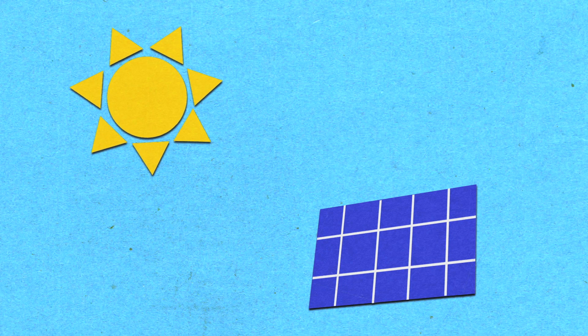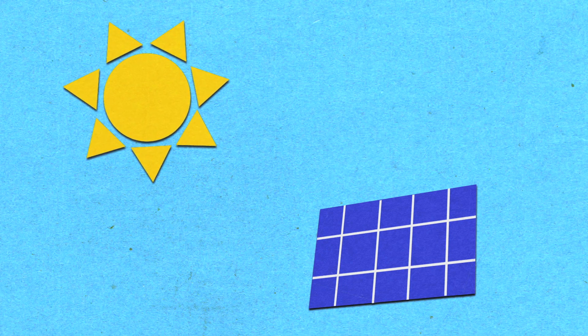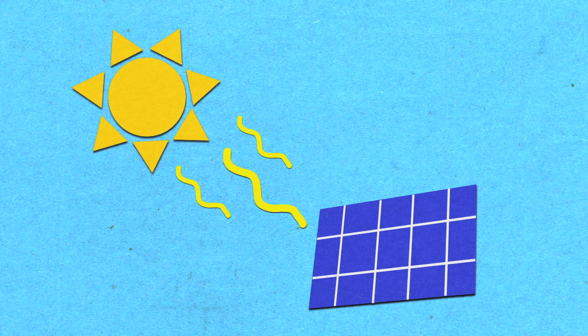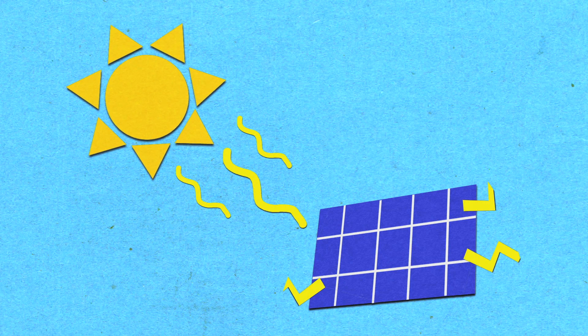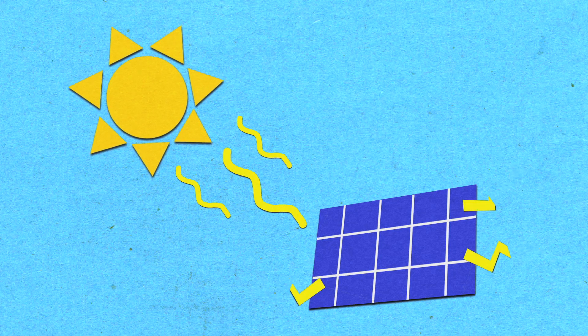Solar cells are materials that can take the energy that comes in from the Sun in the form of photons and convert those photons and that energy into a different kind of energy, which is electricity. So it's converting photons into electrons.